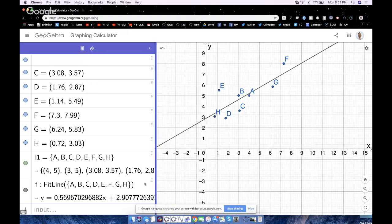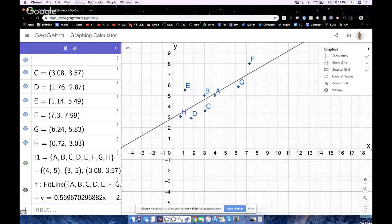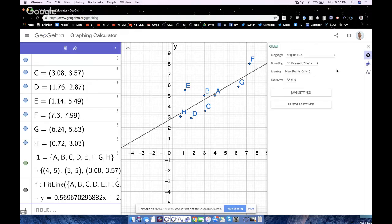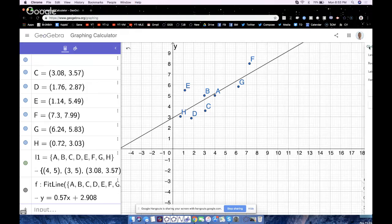You can go back to the calculator and say, oh, there it is right here. Now, granted, I think that's rounding to like 13 decimal places, which is ridiculous. So let me go over here to settings, the gear here. I'll change it to something like maybe three. That's probably a little more nicer and more pleasing to look at. That's one way.